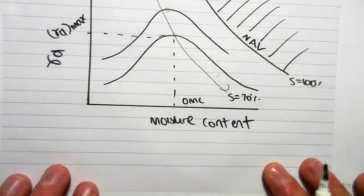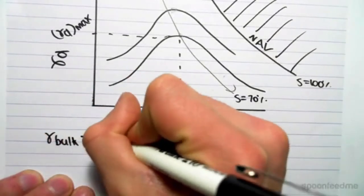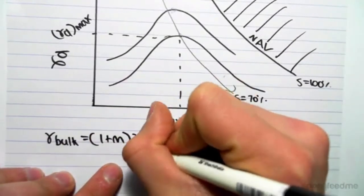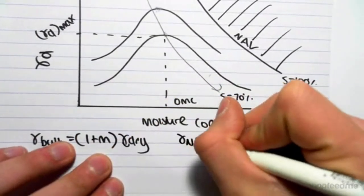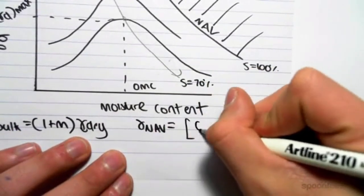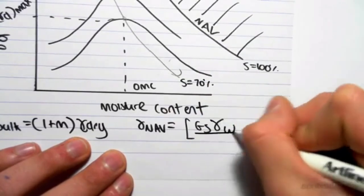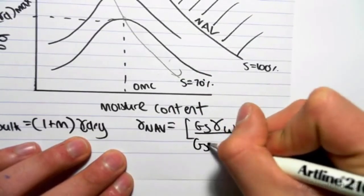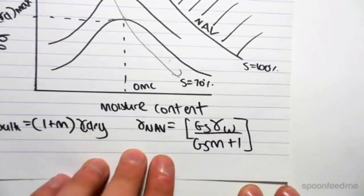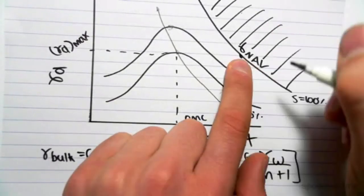I need to introduce you to two more formulas, and then we can do an example. Gamma bulk equals one plus the moisture content outside of gamma dry. And also, the no air voids line is just when the saturation is 100%. You guys can go derive this in your own time. It's going to be the specific gravity times the gamma of water, over the specific gravity times the moisture content plus one. So there's our formula for the gamma of the no air voids line.